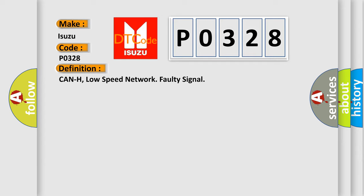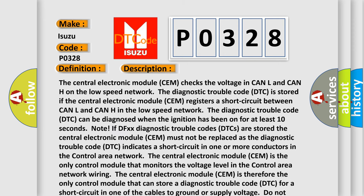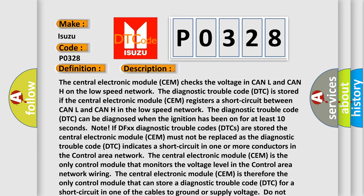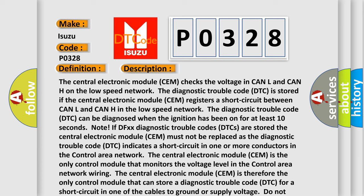And now this is a short description of this DTC code. The central electronic module CEM checks the voltage in CAN-L and CAN-H on the low speed network. The diagnostic trouble code DTC is stored.